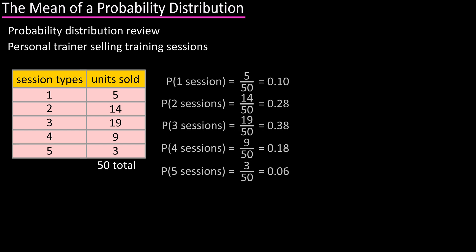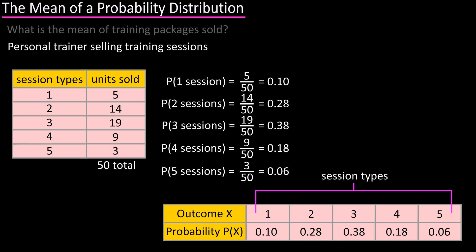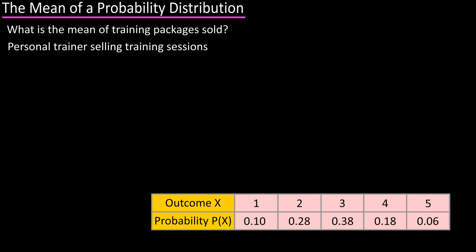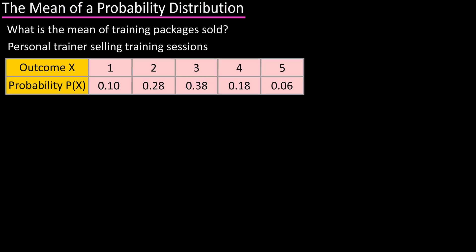Next, you calculate out the probabilities by taking the number of sales of each session package and divide by the total number of sales. You then list those in a probability distribution table like this, and we want to find the mean of the number of training packages sold.